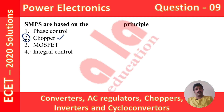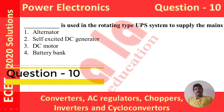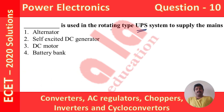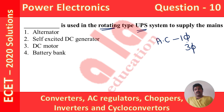Now let us move to the last question, number 10. Dash is used in the rotating type UPS system to supply the mains. UPS means uninterrupted power supply system. In uninterrupted power supply we need a rotating type device, which may be a generator. In India we use AC supply of single-phase or three-phase systems, and the device that supplies single-phase or three-phase AC voltages is an alternator. So the answer is alternator, and option 1 is the correct option.